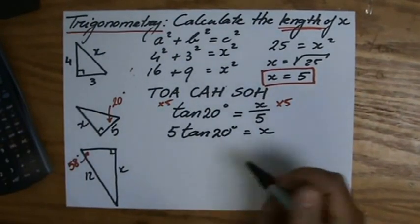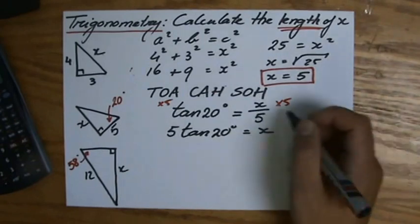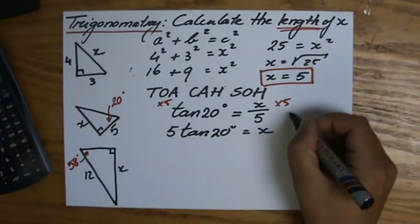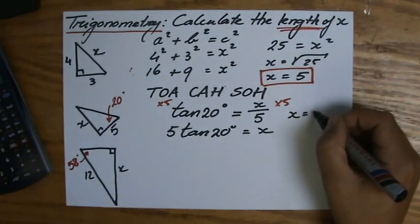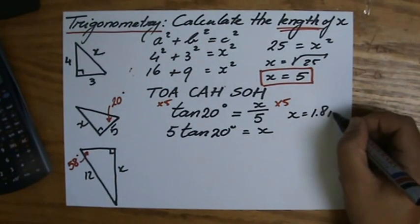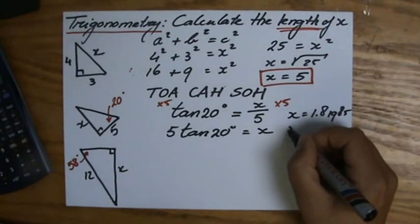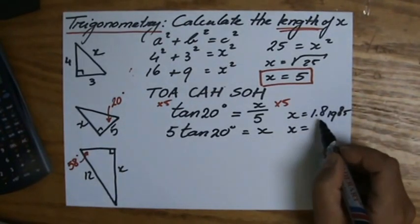And then to three significant figures. So, let me give you all the numbers. I'll put it here. It's x equals 1.81985 and a few more. But three significant figures. So, it's 1.81, but the one will go up to a two.